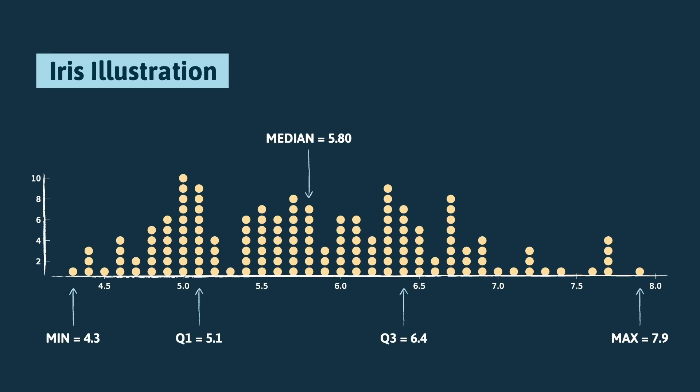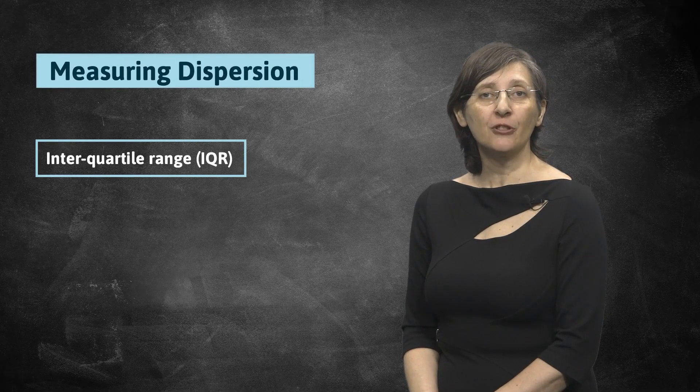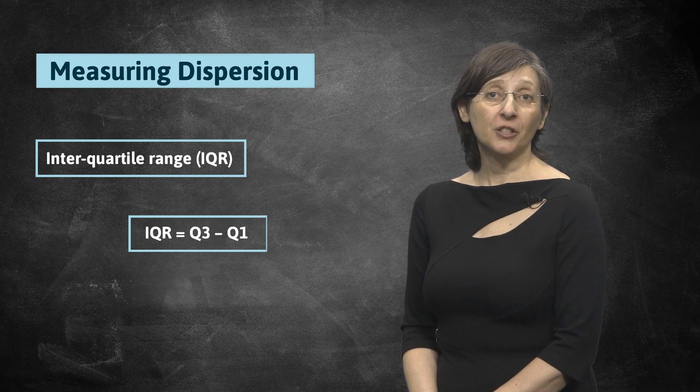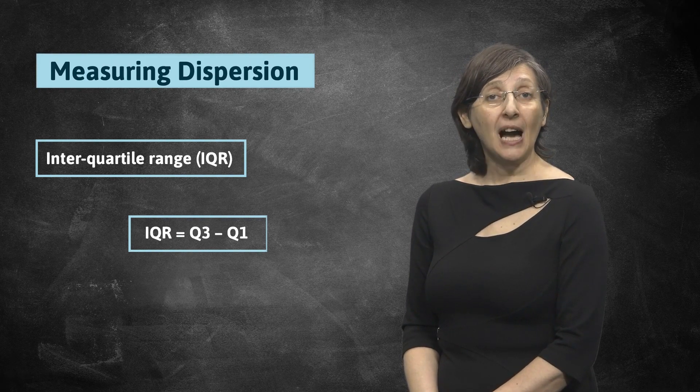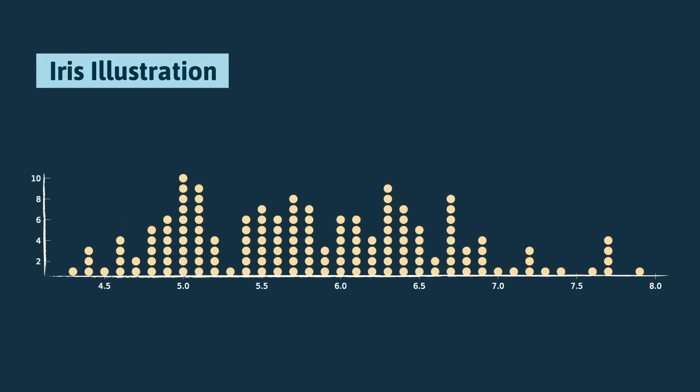From the quartile numbers, it is usual to define the interquartile range as the difference between the third and first quartiles, which covers 50% of the data corresponding to the central values. So, the IQR for the sepal length is just 6.4 minus 5.1, which is equal to 1.3.